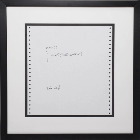Imperative programming languages specify a sequential algorithm using declarations, expressions, and statements. A declaration couples a variable name to a data type — for example, var x: integer. An expression yields a value — for example, 2 + 2 yields 4. A statement might assign an expression to a variable or use the value of a variable to alter the program's control flow — for example, x = 2 + 2; if x == 4 then do_something. One criticism of imperative languages is the side effect of an assignment statement on a class of variables called non-local variables.